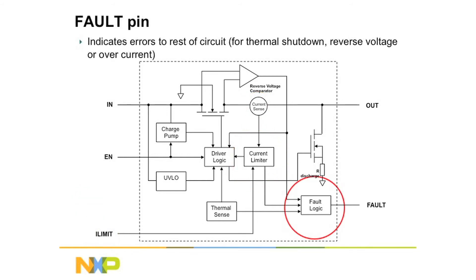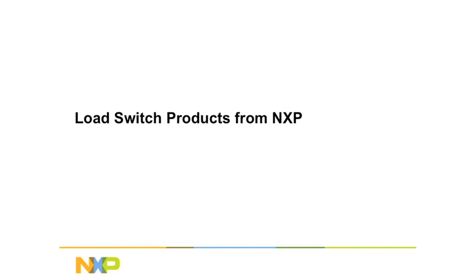And finally, a fault pin. Any of the conditions we've just talked about — reverse voltage, under voltage, thermal, over current — any of those not only might cause the load switch to turn off safely, but a fault pin would also send a signal to the microprocessor, possibly with information that says: something went wrong, I just shut down, this is the reason I shut down, what would you like to do about it? So those are some of the features you'll find in integrated load switches.